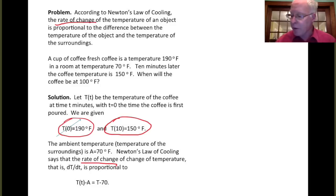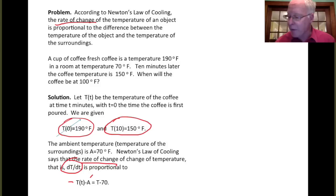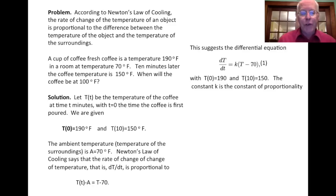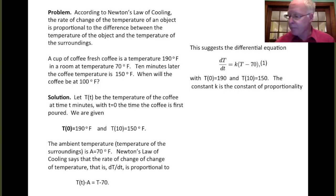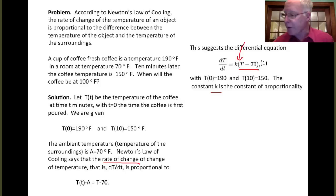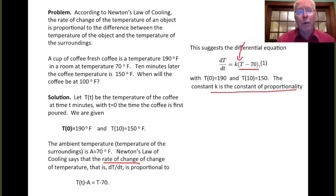The rate of change of temperature tells us how fast temperature is changing, so that's dT/dt. We're told it's proportional to the difference between the temperature of the coffee, which is T, and the ambient temperature, which is 70 — so proportional to T minus 70. All this together suggests the differential equation dT/dt equals k times (T minus 70). When you have two things in proportion, it means one is a constant multiple of the other, so we have this k, the constant of proportionality. With enough given conditions, you can find that constant, and that will be the case in this problem.